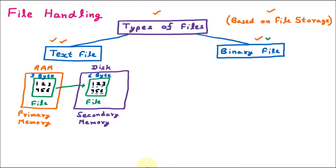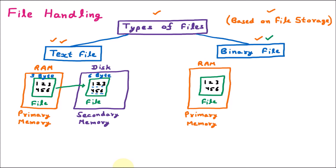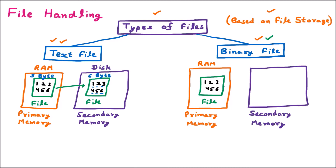For the binary file, let us suppose we have a file containing the same numeric data: 1, 2, 3, 4, 5, 6. This file is first created in primary memory — RAM. When we save the file it moves to secondary memory, which is the disk or hard drive. Since we are dealing with a binary file, the binary equivalent is stored. For example, the numbers are stored as binary: 1, 0, 1, 0, 1, 0, 1, 1 — in that form.